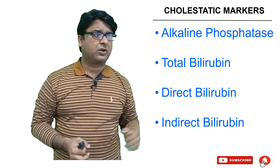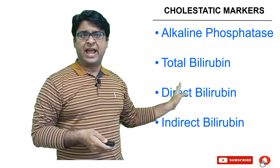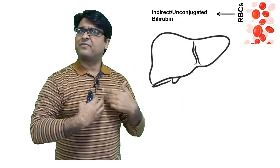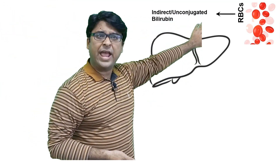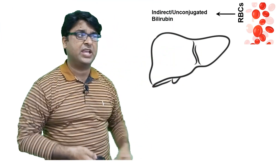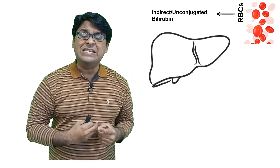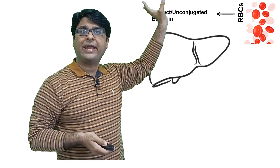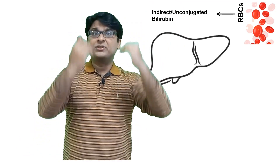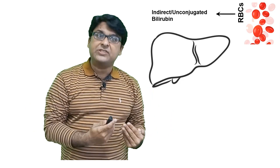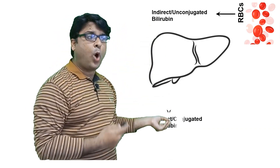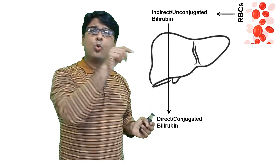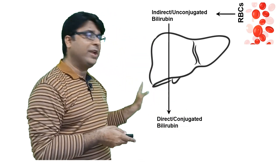Now let's talk about cholestatic markers: alkaline phosphatase, total bilirubin, direct bilirubin, and indirect bilirubin. Normally, red blood cells after 120 days are broken down, producing unconjugated (indirect) bilirubin. Red blood cells break down in the spleen and macrophages release this indirect bilirubin. It goes to the liver, where conjugation happens, and the liver releases direct bilirubin. So: RBCs break down → unconjugated bilirubin → enters liver → gets conjugated → exits as conjugated (direct) bilirubin.